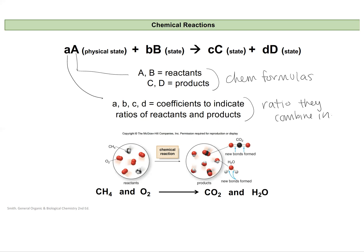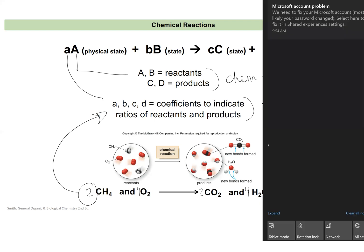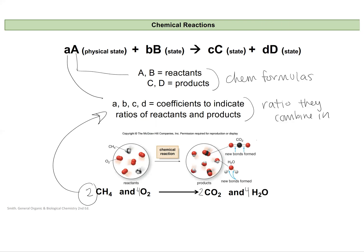So when we were looking at this methane and oxygen example earlier, we counted up that there were two methane molecules and four oxygen molecules combining to form two carbon dioxide and four water molecules. And so these numbers right here are those coefficients. And we'll make sure that before we do anything with a chemical equation, that it is a balanced chemical equation. And we can determine that information from counting up molecules in a picture like this.